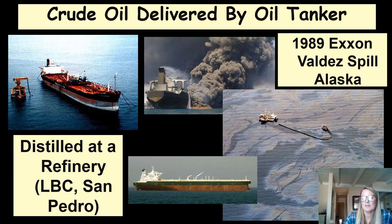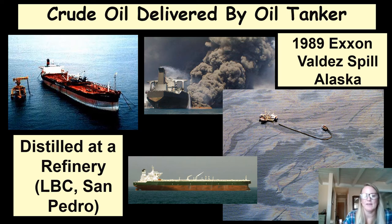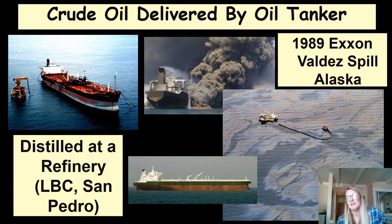Here you see pictures of the 1989 Exxon Valdez oil spill. An oil tanker in Valdez, Alaska was picking up oil from the Trans-Alaskan pipeline, hit a rocky reef, and spilled all of its contents into the Pacific Ocean. The oil needed to go to a refinery to produce things like gasoline and asphalt. Locally, we have tons of refineries in Long Beach, San Pedro, Carson, and Wilmington — all taking crude oil in and refining it into different products.